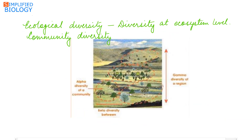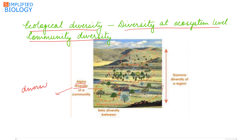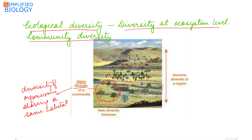The last type is ecological diversity — diversity at the ecosystem level. Before discussing ecosystem diversity, let's go through community diversity. Community diversity exists at different levels. Alpha diversity is the diversity of organisms sharing the same community or the same habitat, like all the animals and plants found in a particular region.